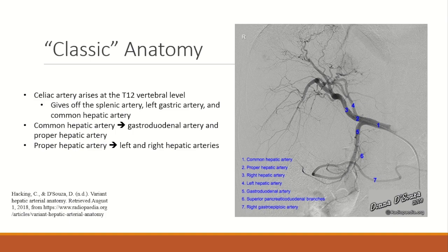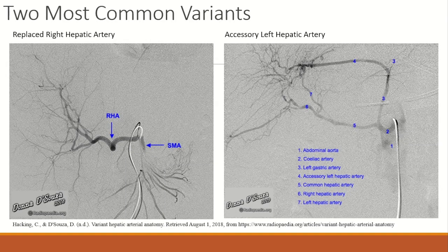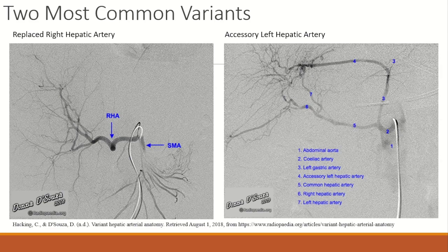Only about 60% of the population has the standard anatomy, so you are likely to see a variation during your IR rotation. Two of the most common variants of hepatic anatomy are shown here. On the left is a right hepatic artery which comes off of the superior mesenteric artery instead of the proper hepatic — often referred to as a replaced right hepatic artery, estimated in 9-15% of the population. The case on the right is known as an accessory left hepatic artery, where the normal right and left hepatic arteries are still present but there is an additional artery to the left lobe coming off of the left gastric artery, estimated in 4-11% of the population.